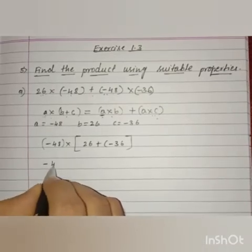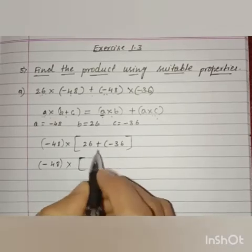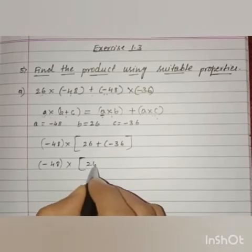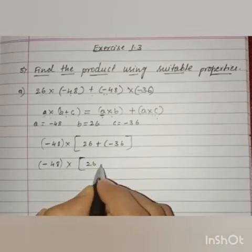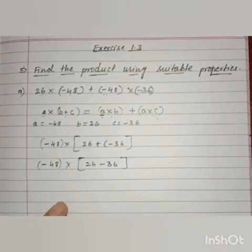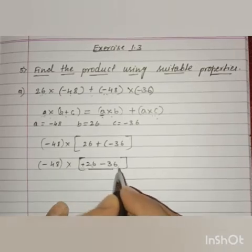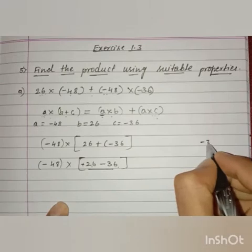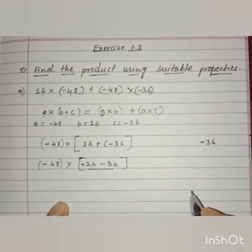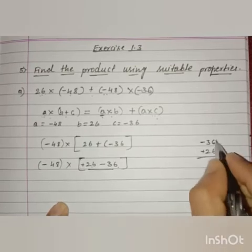So, minus 48 as it is into, now simplify here, 26 as it is plus into minus is minus 36. Now, let us subtract here. If we have positive number and negative number, we have to subtract. So, we have to put greater integer tau and next 26 down.